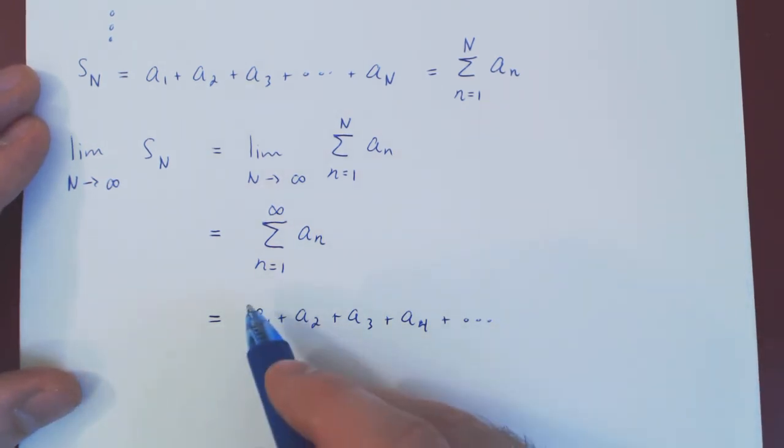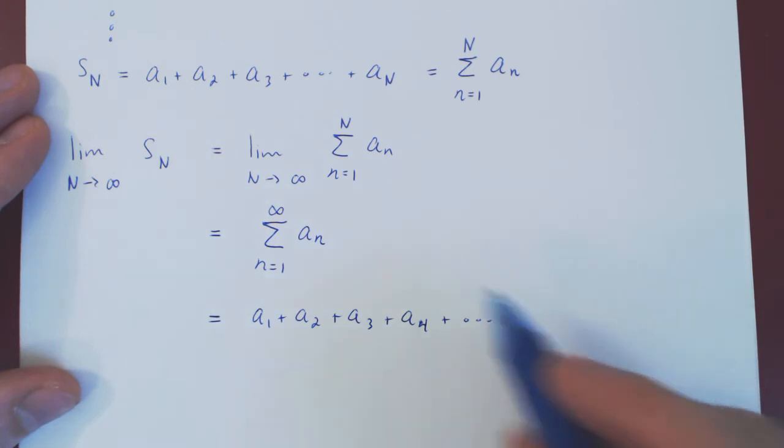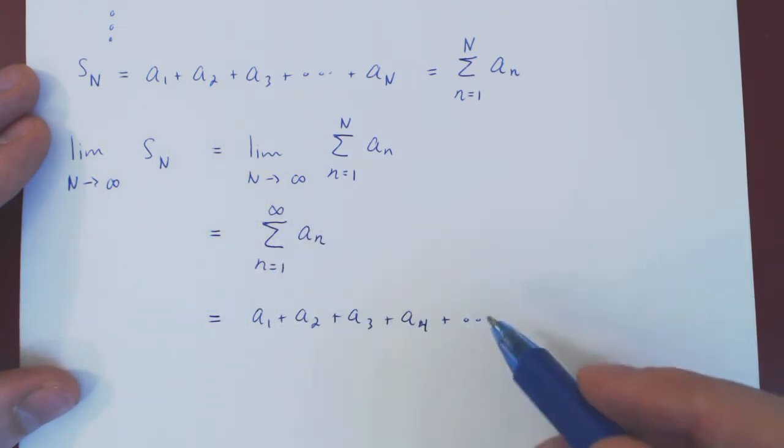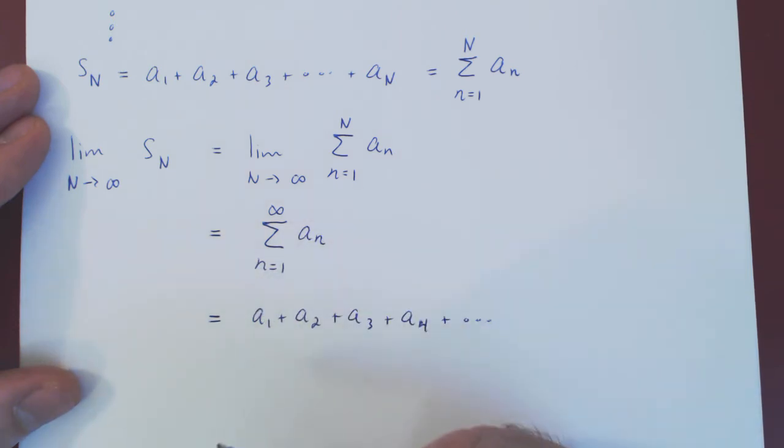And as I've said before, if this infinite sum exists, if the series returns a real number, we say the series converges. If this infinite sum does not exist, then it does not return a real number, and we say that the series diverges.